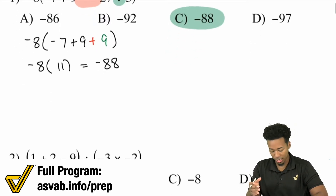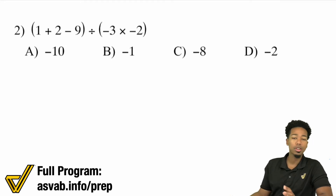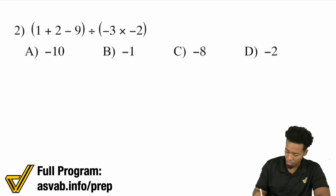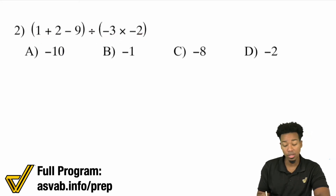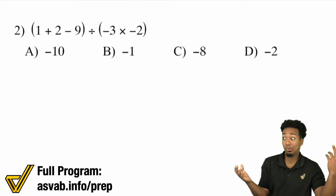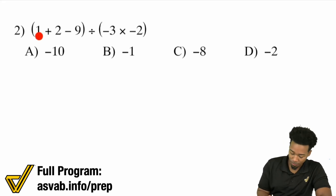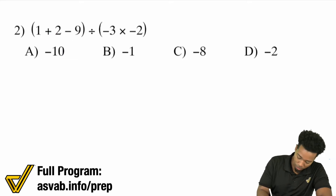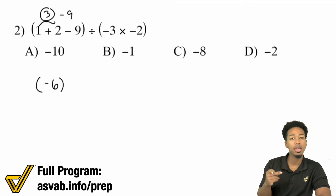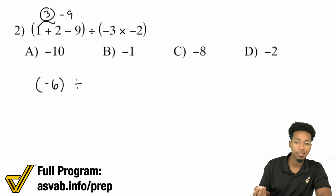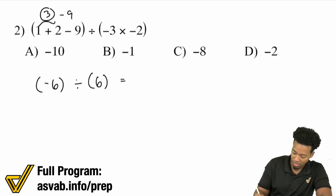Moving to the next one — don't get freaked out by how many steps there are. Just browse through it: we have one group divided by another group, so take care of each parentheses, then divide. Inside the first group: 1 plus 2 minus 9. One plus 2 is 3, and 3 minus 9 is negative 6. For the second group: negative 3 times negative 2 — a negative times a negative is positive, so 3 times 2 is 6.